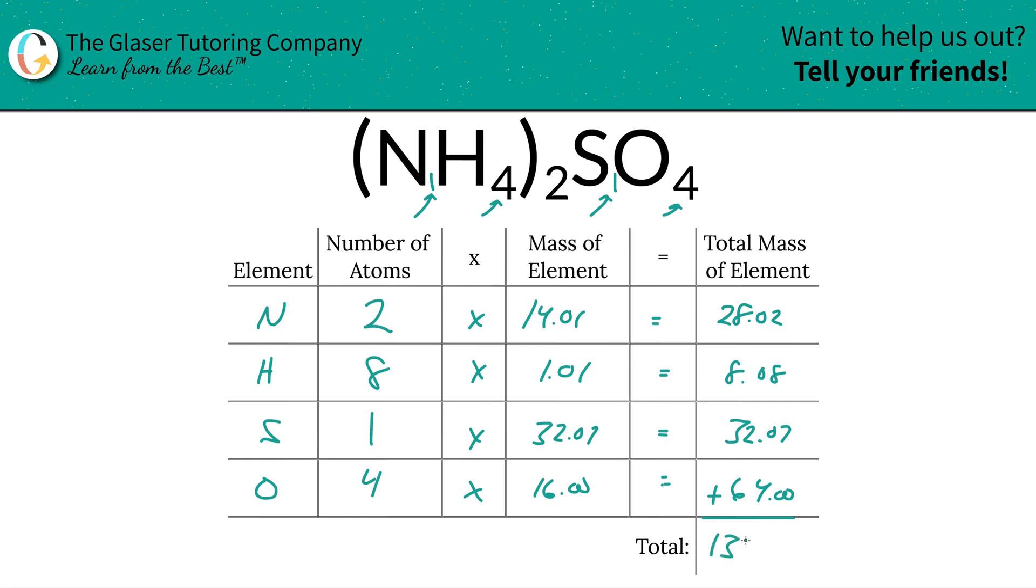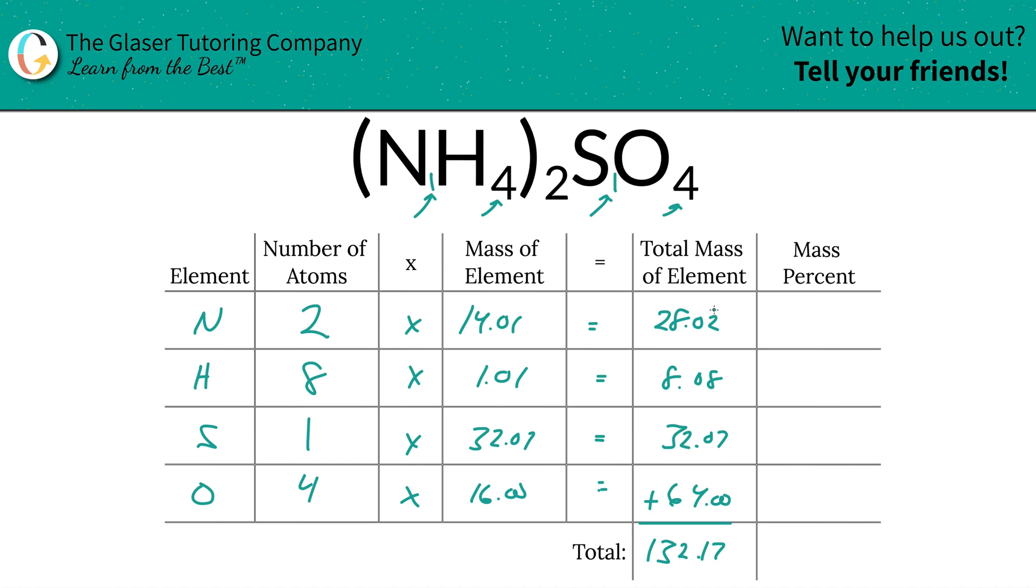To find the total mass in the compound, it's fairly straightforward now. All you've got to do is add this column up, and that's really what we're interested in here: 132.17. That was the first step of the process, finding the total mass of the compound. Now that we know this, I'm going to add a column to the table, and finding these percentages is going to be easy as pi.